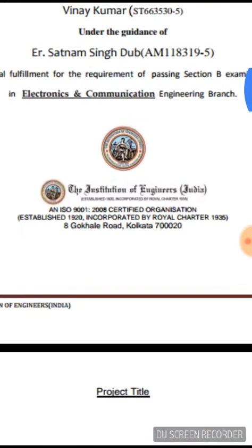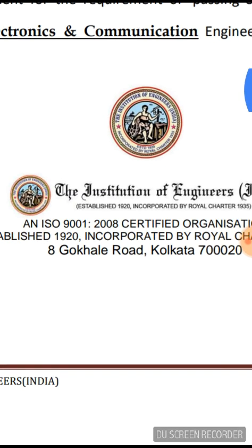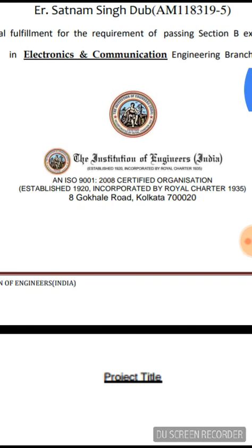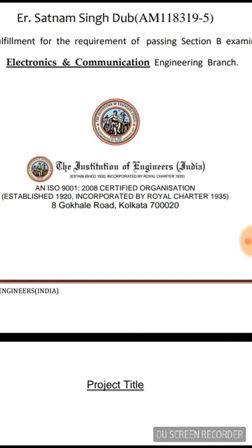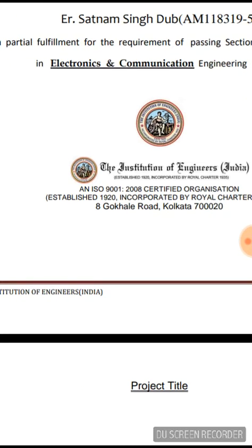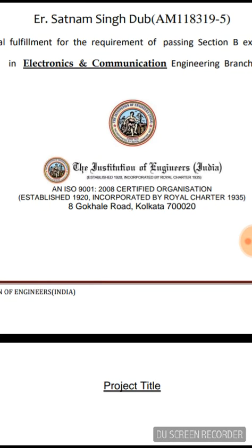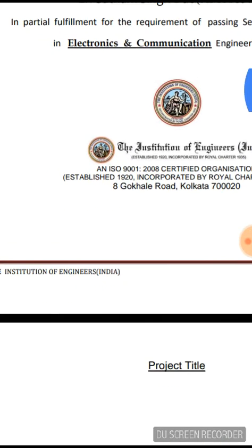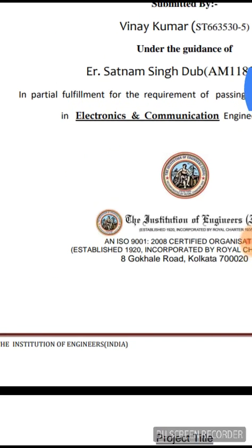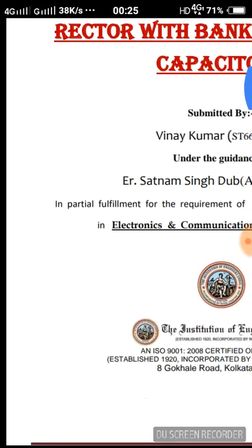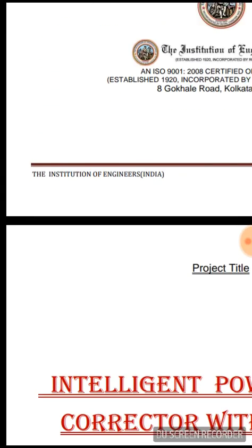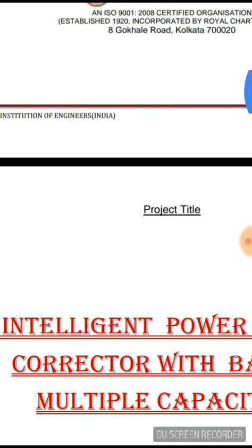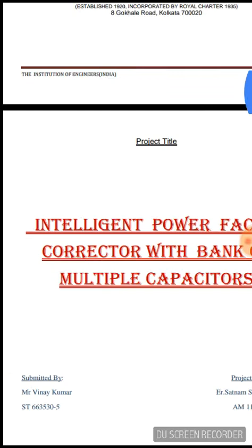The most important thing is also the logo of the Institution of Engineers. You have to make this kind of logo in the footer section of your front page. The details include: ISO 9001-2008 certified organization, established 1920, incorporated by Royal Charter 1935, 8 Gokhale Road, Kolkata 700020. You have to write 'The Institution of Engineers India,' and the page number must be given on each and every page of the project report.